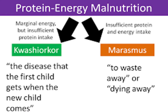PEM occurs in two forms: marasmus and kwashiorkor, which differ in their clinical features. Marasmus is a form of protein energy malnutrition occurring chiefly among very young children in developing countries, particularly under famine conditions in which the mother's milk supply is greatly reduced. Marasmus results from the inadequate intake of both protein and calories. Marasmus is characterized by growth retardation and progressive wasting of subcutaneous fat and muscle.